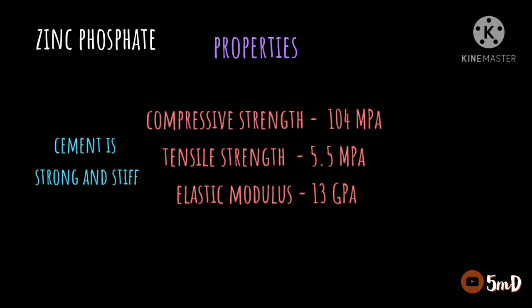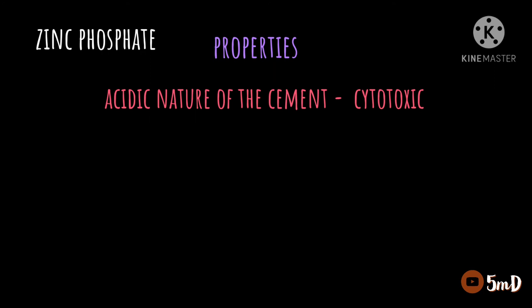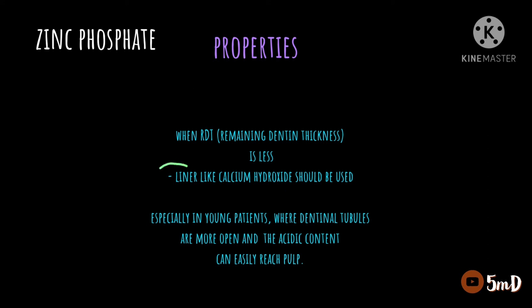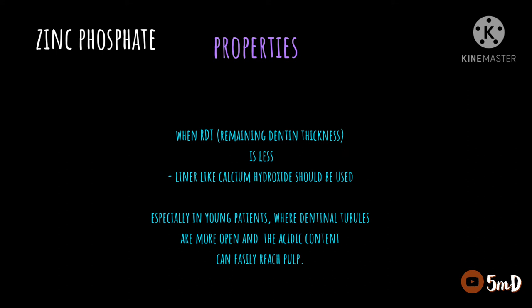Biological considerations include the acidic nature of the cement, which is cytotoxic, especially when the remaining dentin thickness is less. When zinc phosphate cement is used as a luting cement, care must be taken regarding this acidity, which could affect the viable pulp. A calcium hydroxide liner can be used in younger patients where dentinal tubules are wider and acids are conducted to the pulp faster, though use of a liner can also reduce retention.